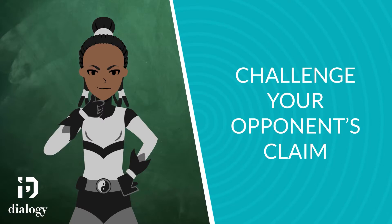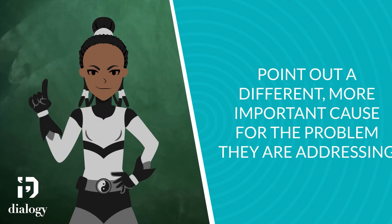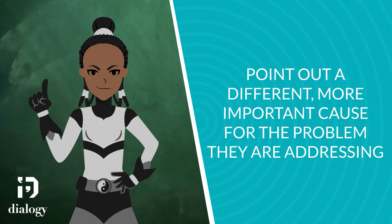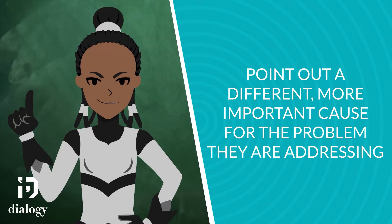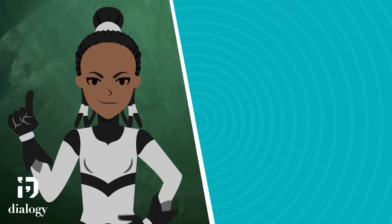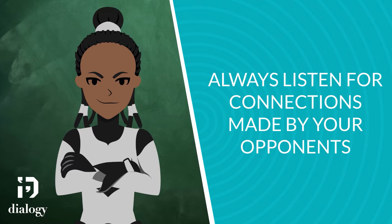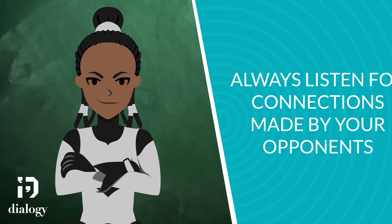The critical point here is to challenge the causal claims that your opponents are making. If you can point out that there is a different, more important cause of the problem they are addressing, you can effectively challenge and rebut their solution to the problem. Just because two things are correlated does not mean they cause one another. In your next debate, listen carefully to the connections and links made by your opponents, and ask yourself whether they are mistaking correlation with causation. Good luck!